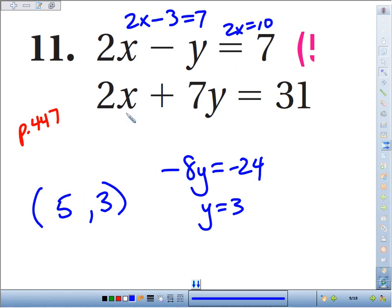You can always check it. 2 times 5, that's 10. 7 times 3, that's 21. And 10 plus 21 checks out. Equals 31.